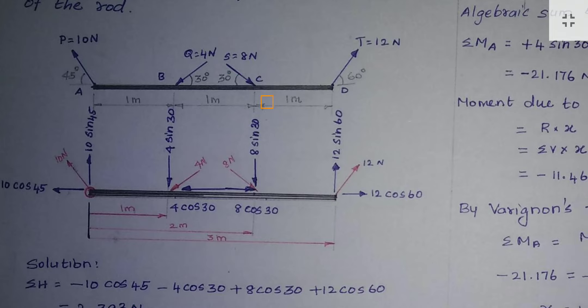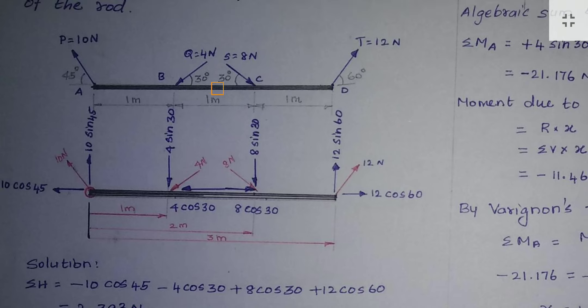The third force is 8 Newton, also acting at 30 degrees. While resolving, the vertical force is downward and the horizontal force is towards the right. So this gives 8 cos 30 and 8 sin 30. The fourth force T has a 60 degree angle, giving horizontal component 12 cos 60 and vertical component 12 sin 60.